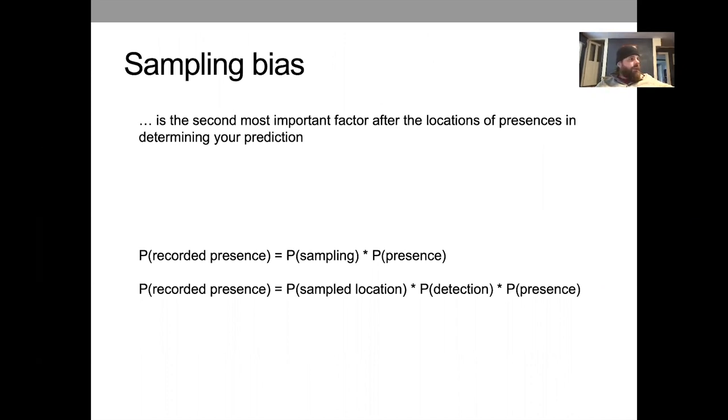For example, sampling bias. If you sample the locations on the landscape non-randomly, you may have sampling bias. So this would mean that all locations with high temperatures were not as likely to be sampled as low temperatures. That could influence your inference because you may have a biased sample of presences if the species also occurs at high temperatures. I think this doesn't get as much attention as it perhaps should in the literature. I would say that sampling bias is probably the second most important influence on your model prediction, right after the locations of presences that determine your prediction.